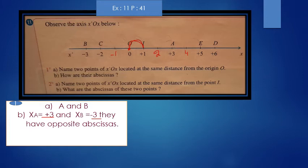Name two points of x'Ox located at the same distance from point I. I have to take into consideration that point I is the midpoint. So, I have to move right or left to get the same distance. There is not any point that is symmetrical of O with respect to I. Let's move to A. Two steps here, two steps there. There is not any point symmetrical to A. C also has no symmetrical point.